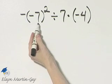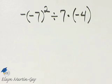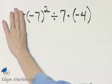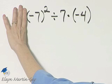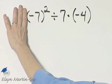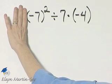So we will begin here by finding negative 7 quantity squared. Do not think about this outer negative sign yet. Negative 7 quantity squared, that's negative 7 times negative 7, which is positive 49.